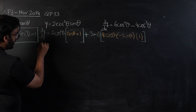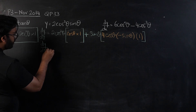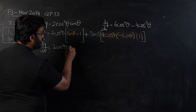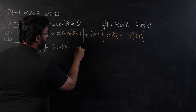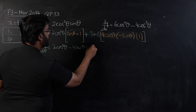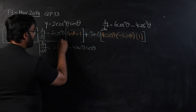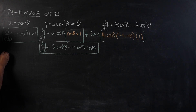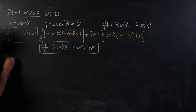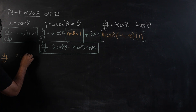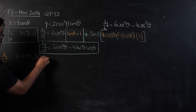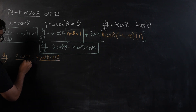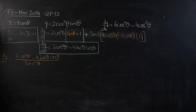Now, let us simplify it a little bit. So, dy by dθ, we will be left with 2cos³θ minus 4sin²θcosθ. So, this is the differentiation of y. Now, let us start getting dy by dx — we know we are going to divide both of them. So, this is 2cos³θ minus 4sin²θcosθ upon sec²θ. So, I have divided both of them.